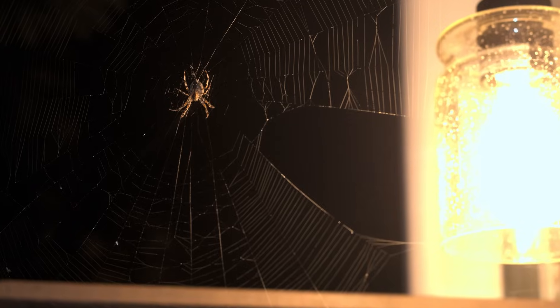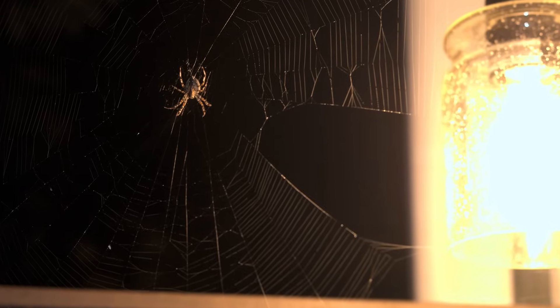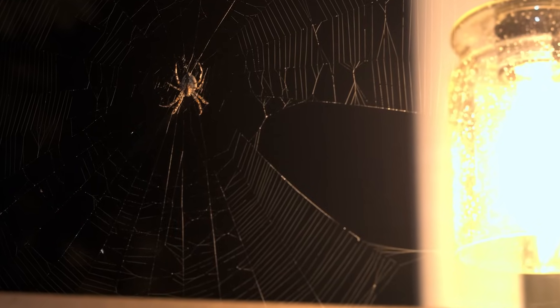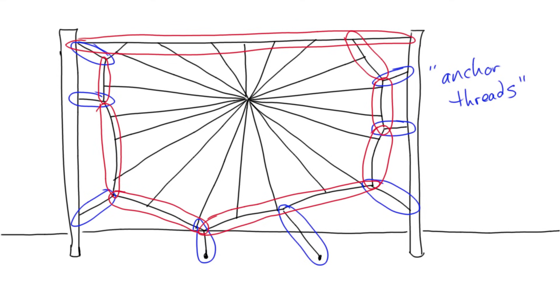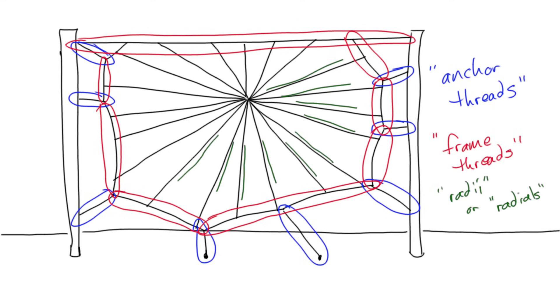Now, I just used some terms like radii and frame threads — what are those? If we look at a web, we can identify a few different components. The threads that attach directly to the supporting structure are anchor threads. The threads around the perimeter are frame threads. And these are the radii — and you'll notice that none of the radii are ever attached directly to the supporting structure, only to the frame.